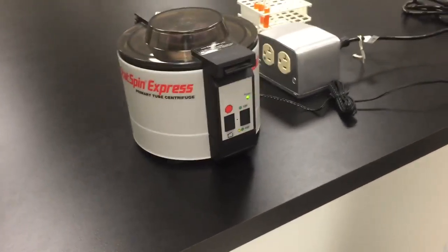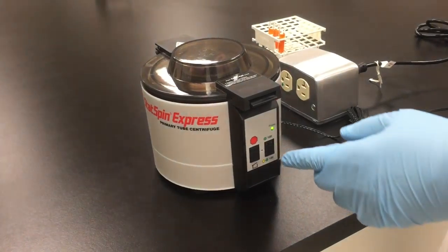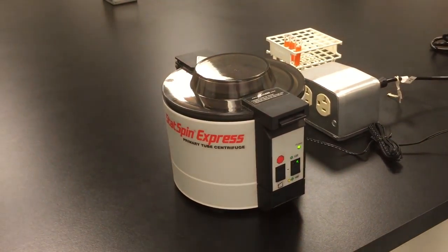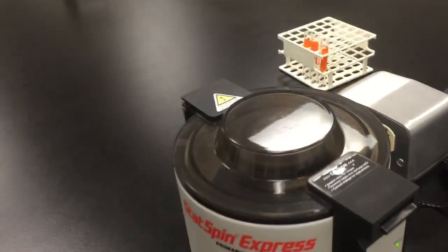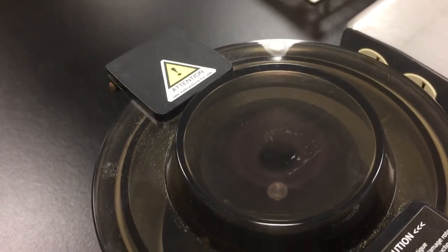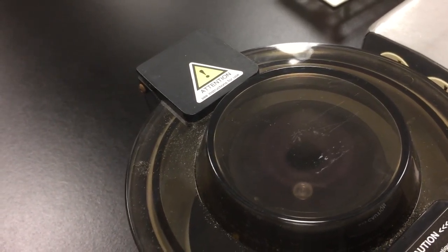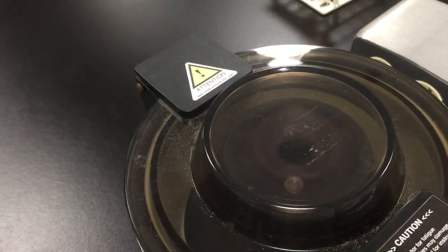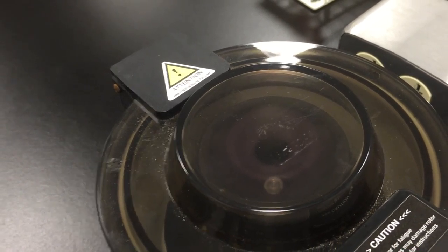And our student is going to press the on button to centrifuge the blood. This right now is spinning at 120 RPMs, which stands for rotations per minute.